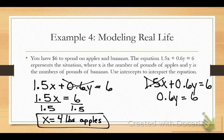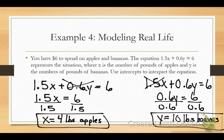When I divide both sides by 0.6, what do I get? 10 pounds of bananas — that's a lot more food. Bananas are just a little cheaper. If you understand that, that's everything you need to know for section 4.5.